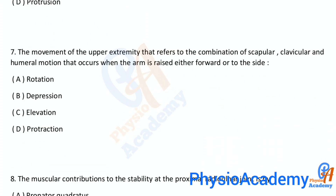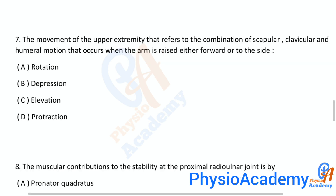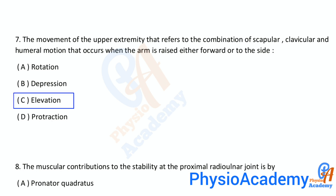Question number seven: The movement of the upper extremity that refers to the combination of scapuloclavicular and humeral motion that occurs when the arm is raised either forward or to the side: A) rotation, B) depression, C) elevation, D) protraction. The correct answer is option C: elevation.